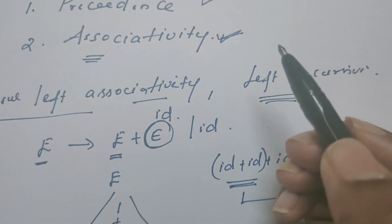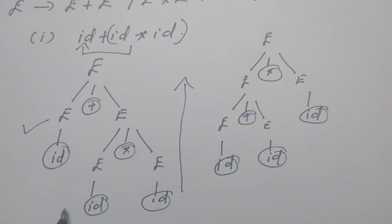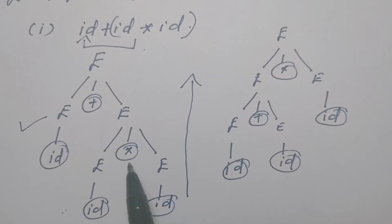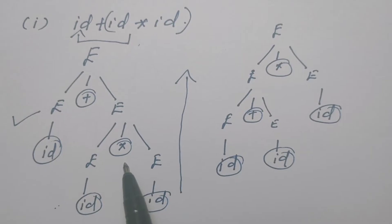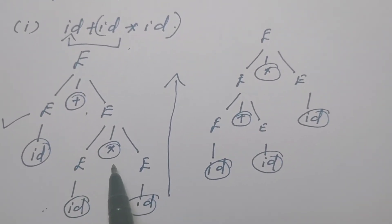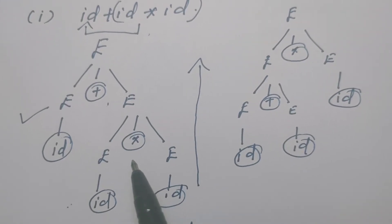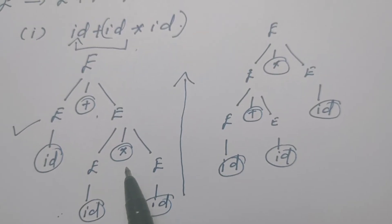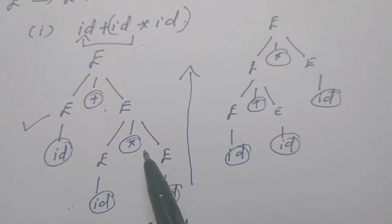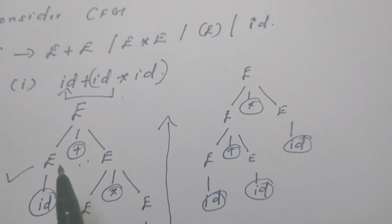How to ensure the precedence? When you observe the parse tree from the bottom, higher precedence operators appear towards the bottom compared to lower precedence operators. Then only higher precedence operators will be evaluated first followed by lower precedence operators. When rewriting the grammar, we have to make sure that higher precedence operations like star and division appear at the bottom of the parse tree, and as the parse tree grows towards the root, lower precedence operators should appear. In such a way, we have to modify the grammar.